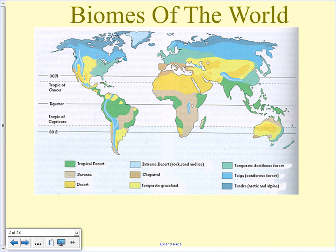Extreme deserts are found almost primarily on the tops of high mountains. Greenland is much extreme desert because it's covered by a glacier. And Antarctica — the whole continent — should also be that color. It's extreme desert as well.